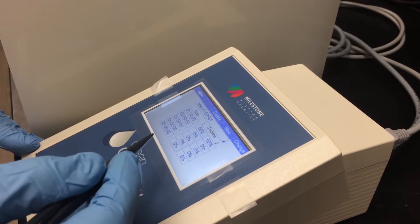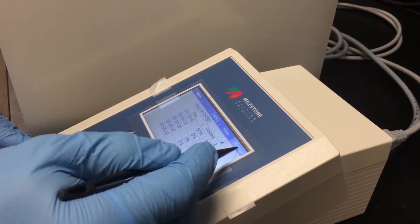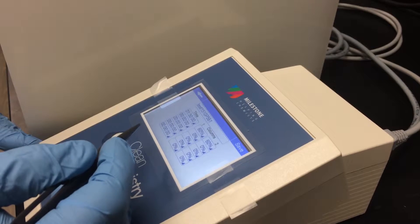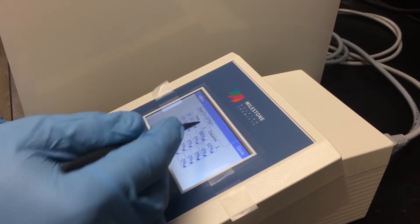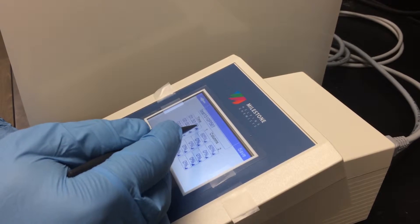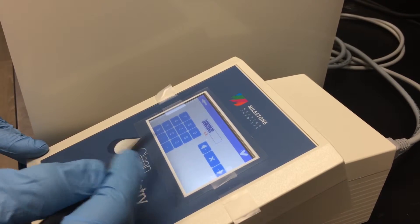Now we're ready to enter in our program and begin our distillation. To program a new method we select the change icon from the top right. Most distillations will take between an hour and one and a half hours so we can change that program by selecting this box here.